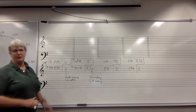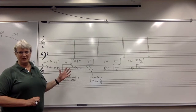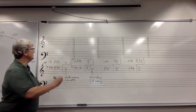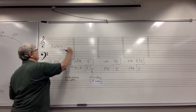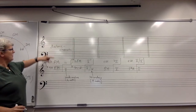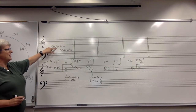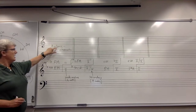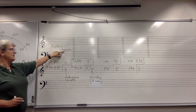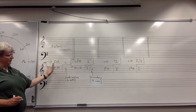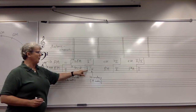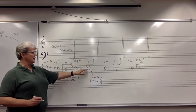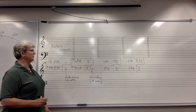Miguel Roig-Francoli has a name for both of these modulations — he calls them diatonic-chromatic modulations. The chord we pick as the pivot chord is diatonic in the first key and chromatic in the second key. By chromatic, I mean either that it's off on the flat side, being a mode mixture chord, or that it's off on the sharp side, being a secondary chord of some sort.